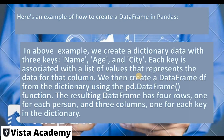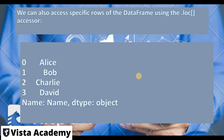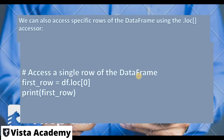In the example, we create a dictionary 'data' with three keys: name, age, and city. Each key is associated with a list of values representing the data for each column. We then create a DataFrame using pd.DataFrame() and pass the dictionary name. We can also access a specific column using the column name — for example, assigning df['name'] to a variable and printing it. The dtype will be shown as object.